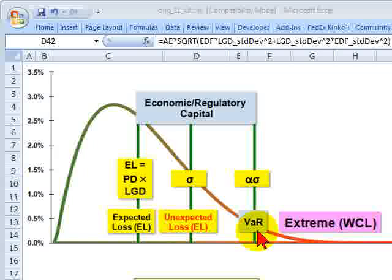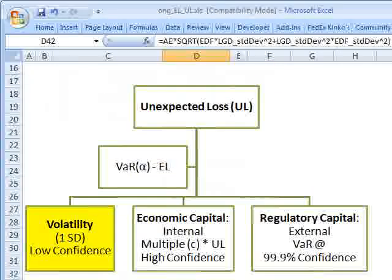And then we get to economic and regulatory capital. So here at a single standard deviation, that's a measure of the volatility and it helps us to quantify the uncertainty. But it's not enough for us to cover these unexpected losses with a capital cushion. It's not enough for either economic or regulatory capital purposes.